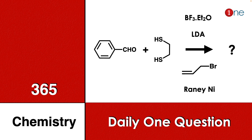Welcome to One Chemistry. This is the 365 Chemistry Series — one daily question for you. Here you have benzaldehyde. You are reacting it with dithiol, using LDA and allyl bromide, and further using Raney Nickel. You have to find what the final product will be.